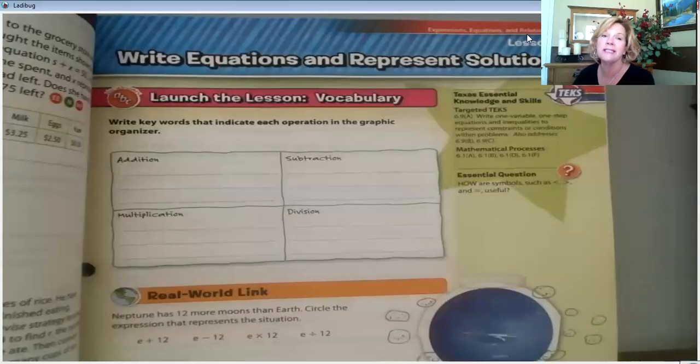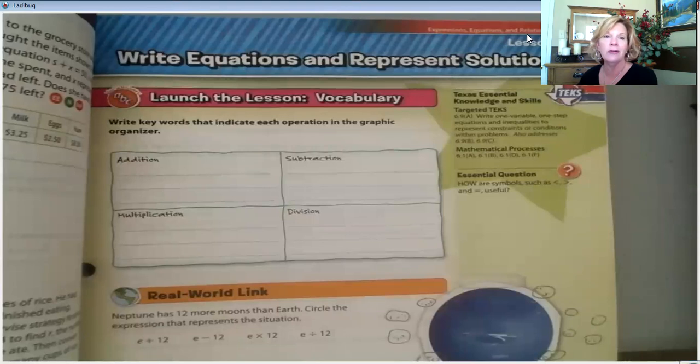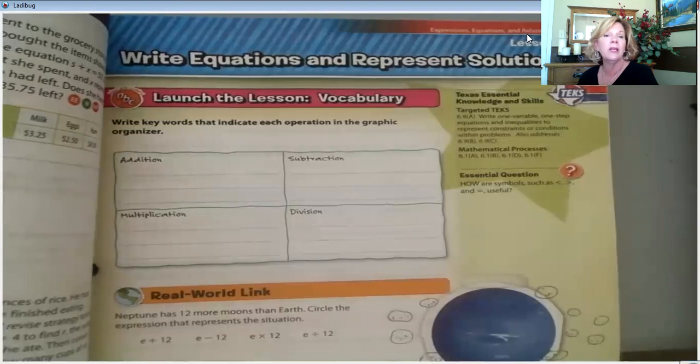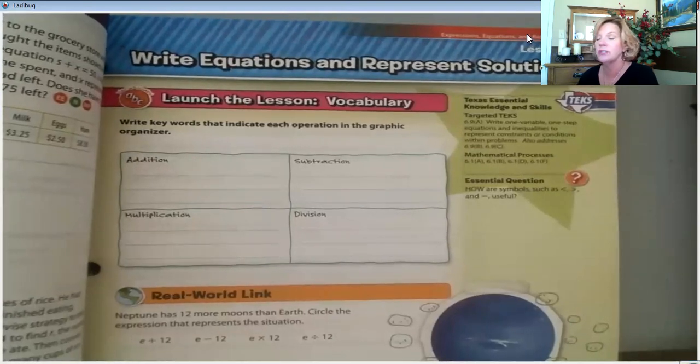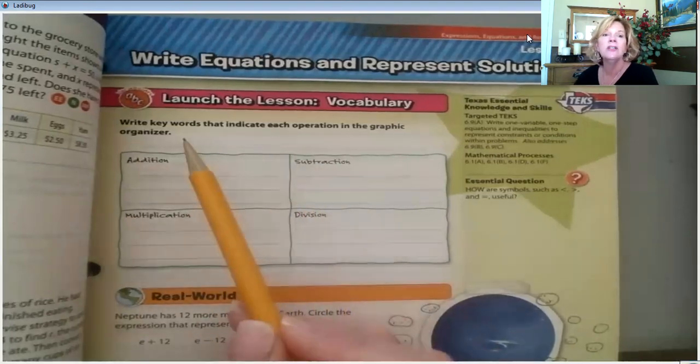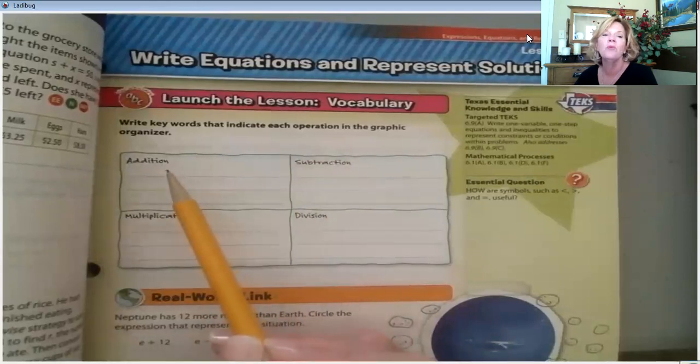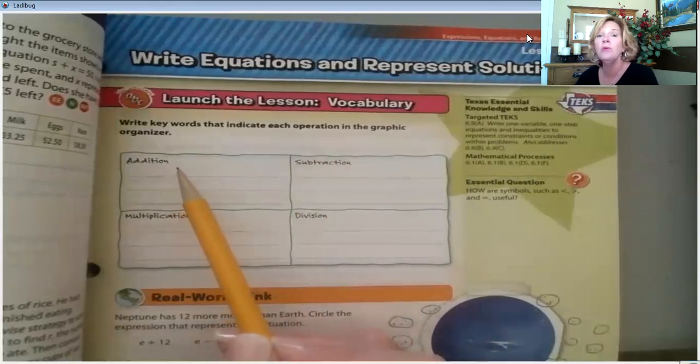Okay, I hope you've gotten your textbook and you have turned to page 597. It is lesson two. You might notice that we skipped lesson one. It's okay. We'll come back and hit that a little bit later. We are going to write our own equations here and we need to think about some words that will help us in this. So, this little activity says to write keywords that indicate each operation in the graphic organizer.